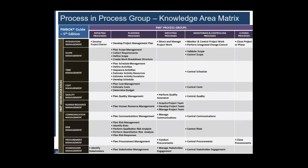So this is the process group and knowledge area matrix. I'll tell you how to read it. On the top you see the columns: Initiation, Planning, Execution, Monitoring and Controlling, and Closing. On the left-hand side you see the knowledge areas.